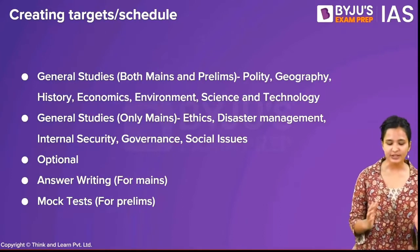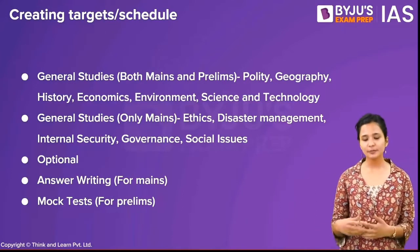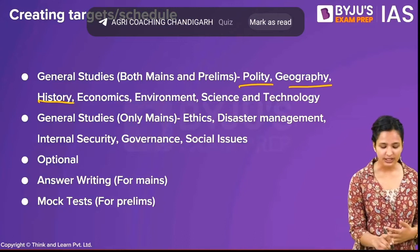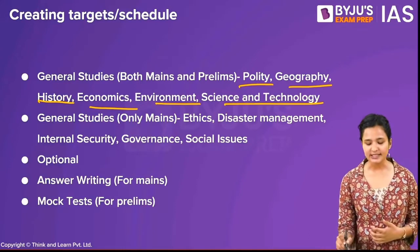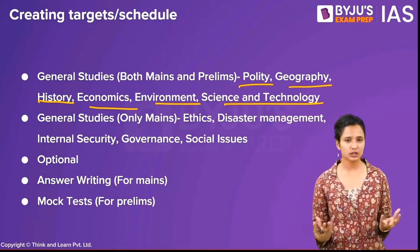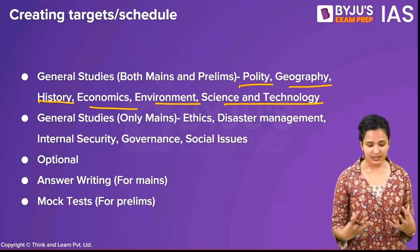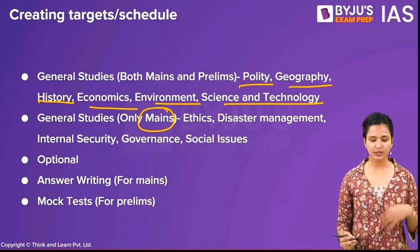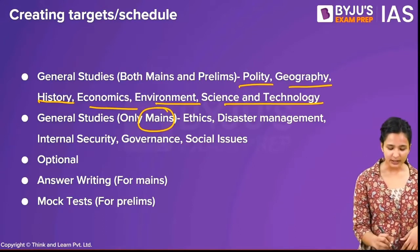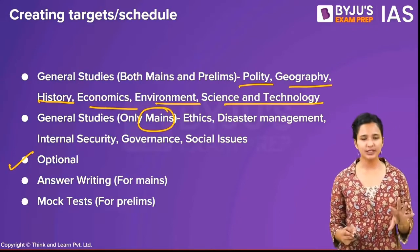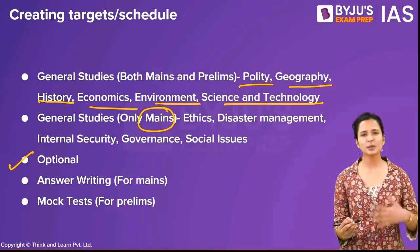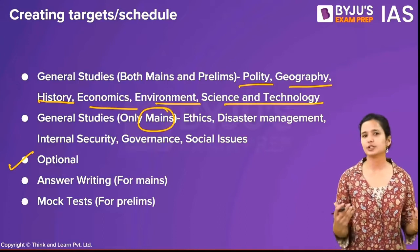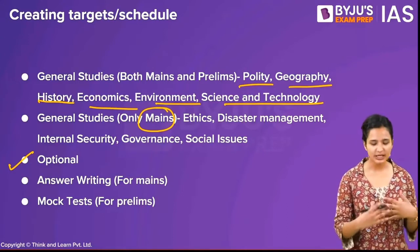There are certain divisions you can make. Firstly, there are subjects in general studies helpful for both mains and prelims — polity, geography, history, economics, environment, and science and technology. At the same time, there are subjects only helpful for mains: ethics (GS4), disaster management, internal security, governance, and social issues. Apart from that, there is your optional, which will mostly only help in mains — though if history is your optional, that knowledge can sometimes help in prelims too. Divide your time accordingly.